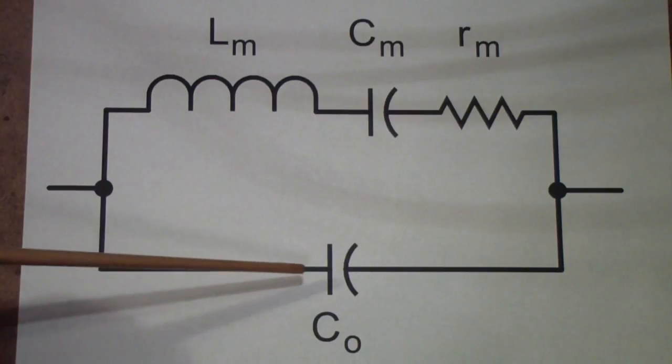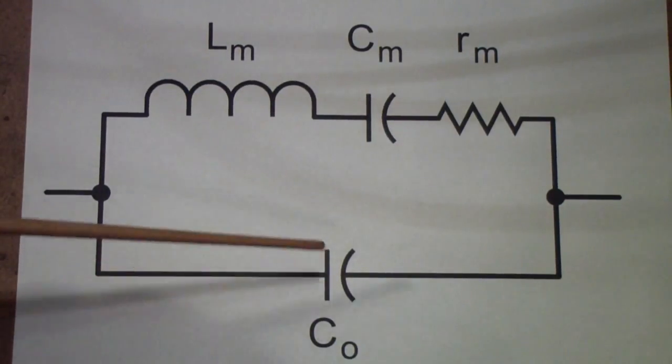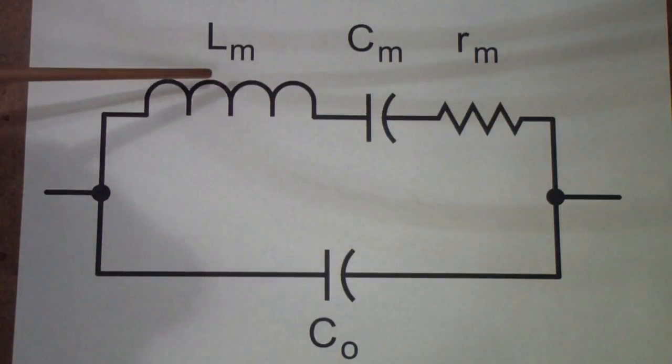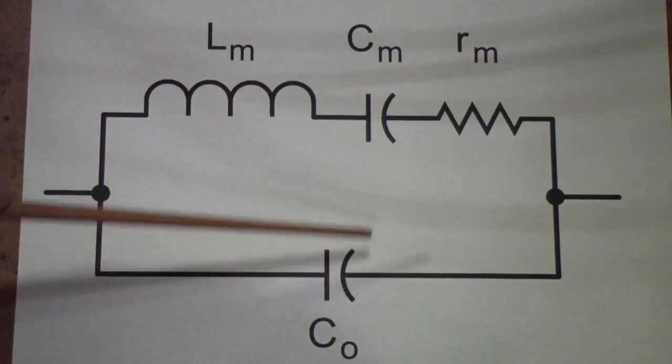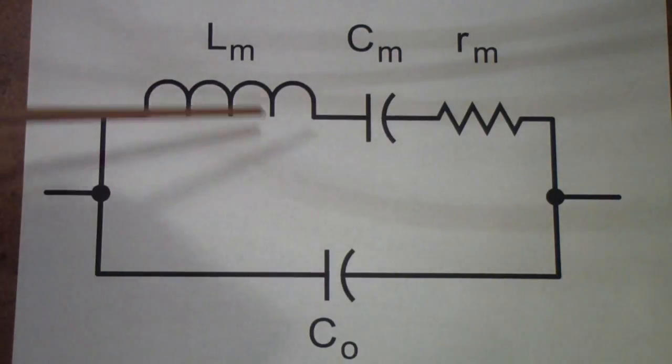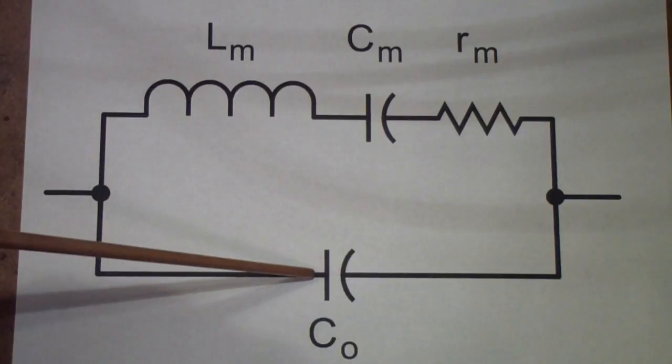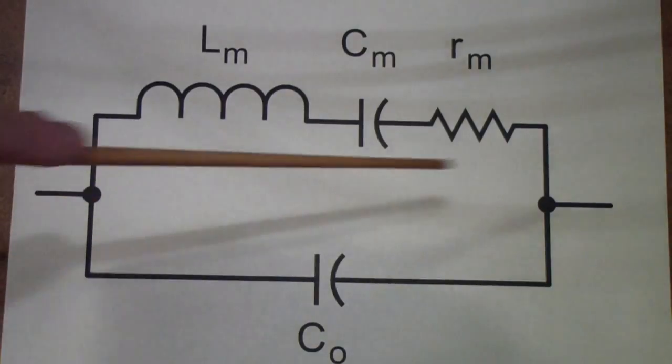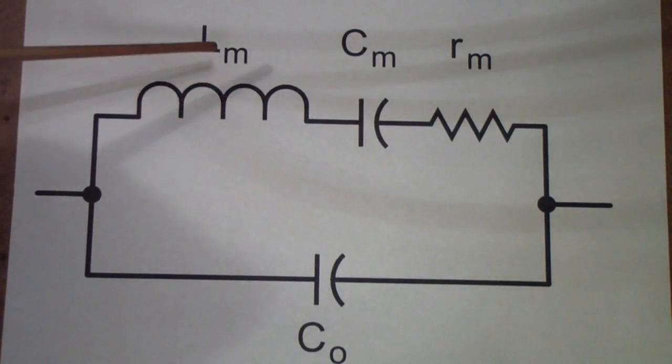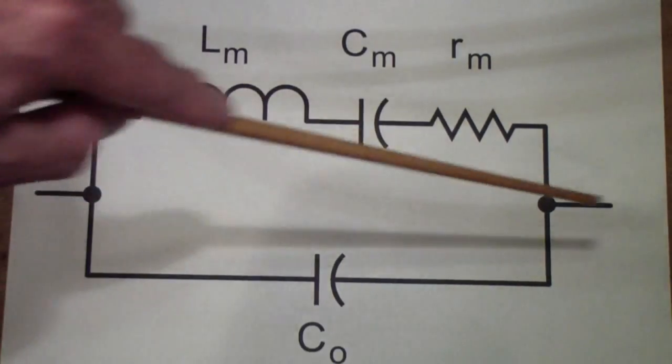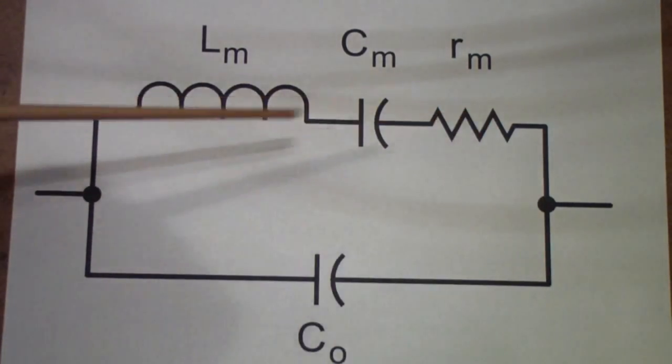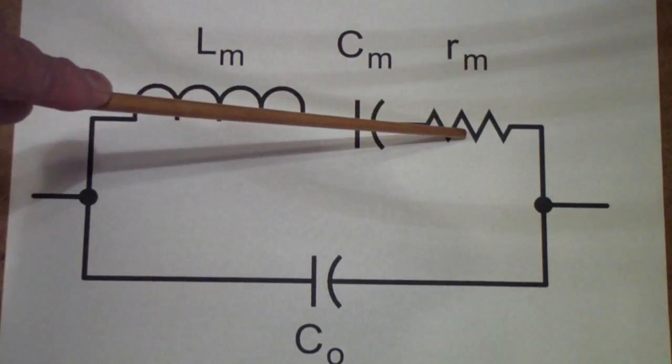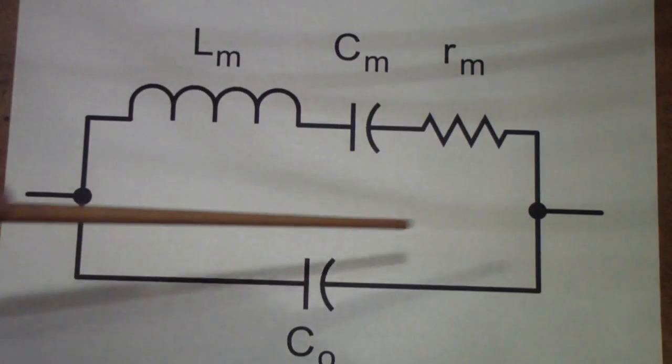But there is a second frequency due to this capacitor interacting or in parallel with this inductor. And at that frequency, called the parallel resonant frequency, this circuit actually becomes a high impedance. So, at that frequency, you get a significant drop in the signal through. So, at the series frequency, just the ESR. At the parallel frequency, very high attenuation.